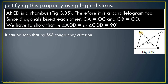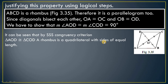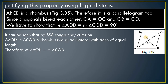To prove the right angle, consider triangles DOA and DOC. Since the diagonals bisect each other, OD is common and OA equals OC. Also, in a rhombus all sides are equal, so DC equals AD. By the Side-Side-Side congruence property, triangles DOA and DOC are congruent.